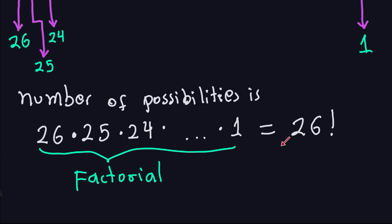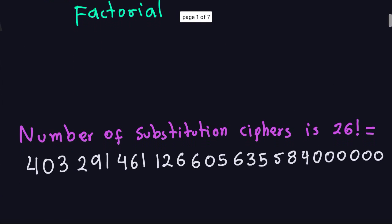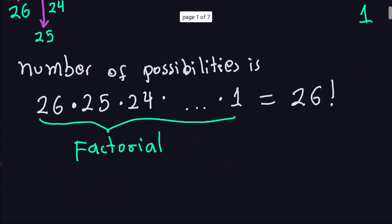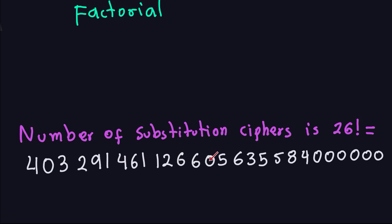So 26 factorial is the number of all keys, or all substitution ciphers. You might think this number is not that big — it's actually really, really big. When you multiply out 26! — which is 26 × 25 × 24 and so on — that product gives you the total number of substitution ciphers you can have.